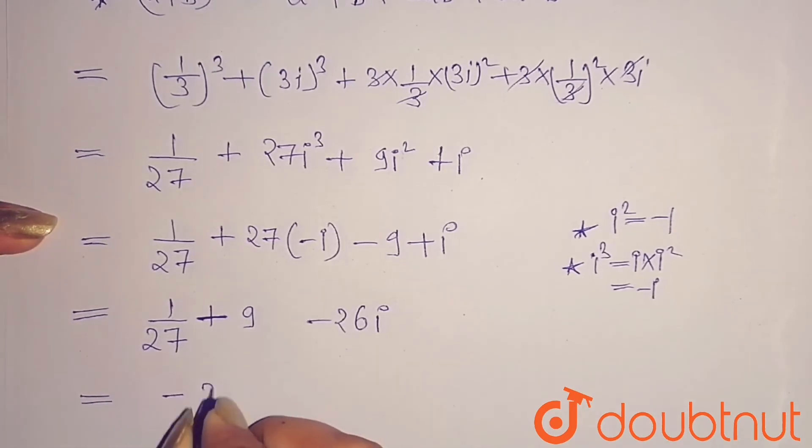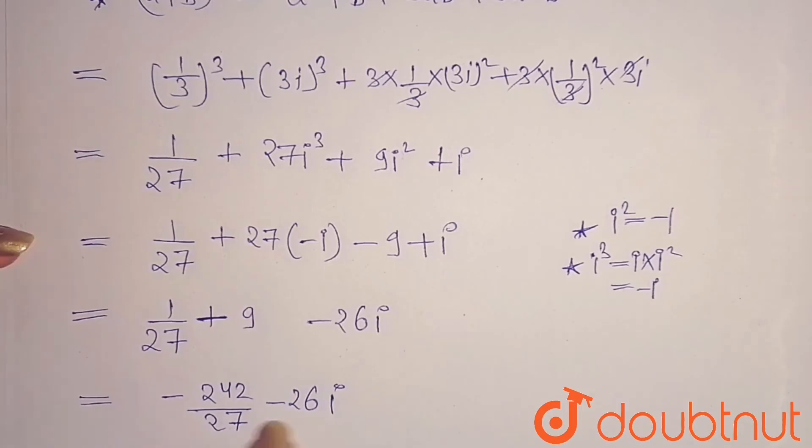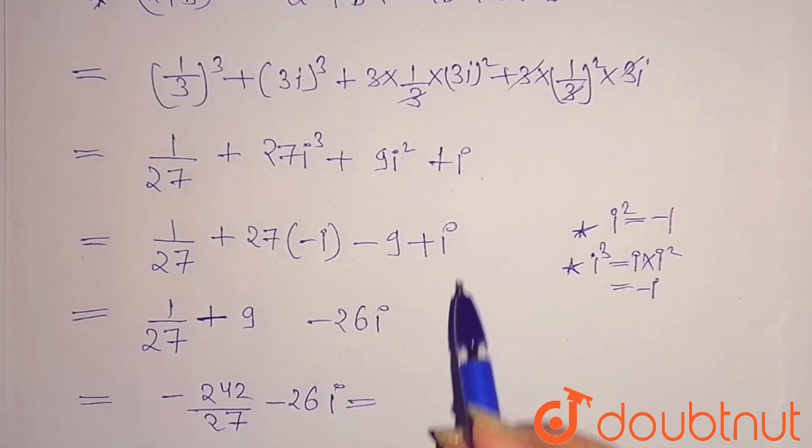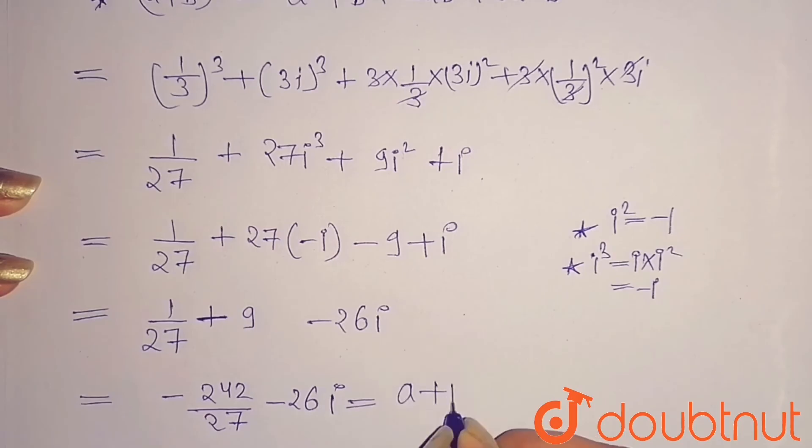And 1/27 + (-9) is here. So when you simplify this part, you will get -242/27 and here I am having -26i. So as you can see, it is in the form of a + ib. This is my answer. So I hope you understand the question, thank you.